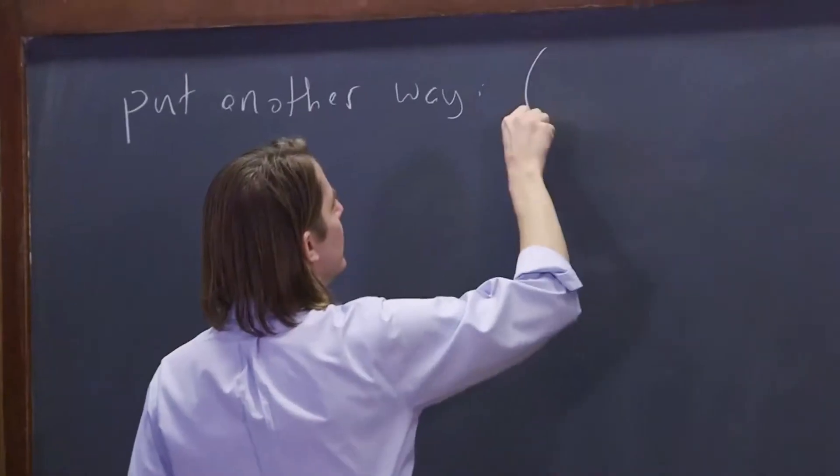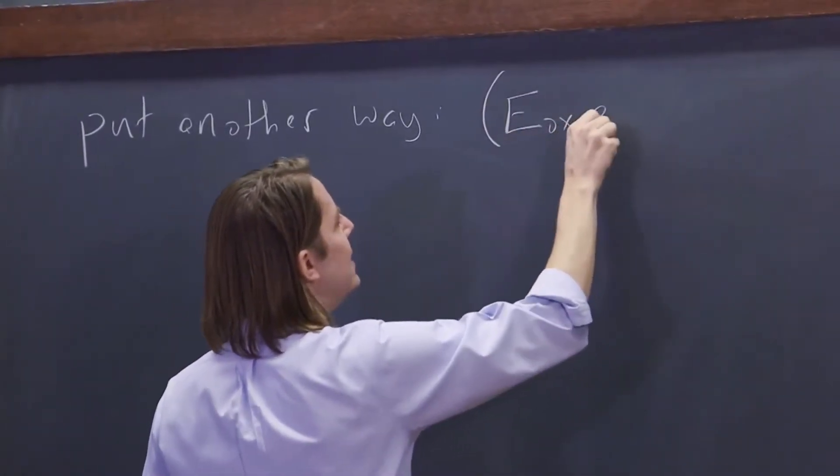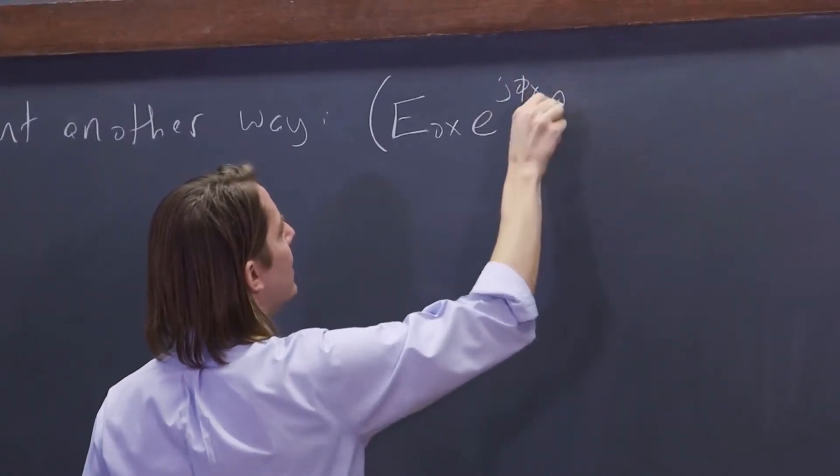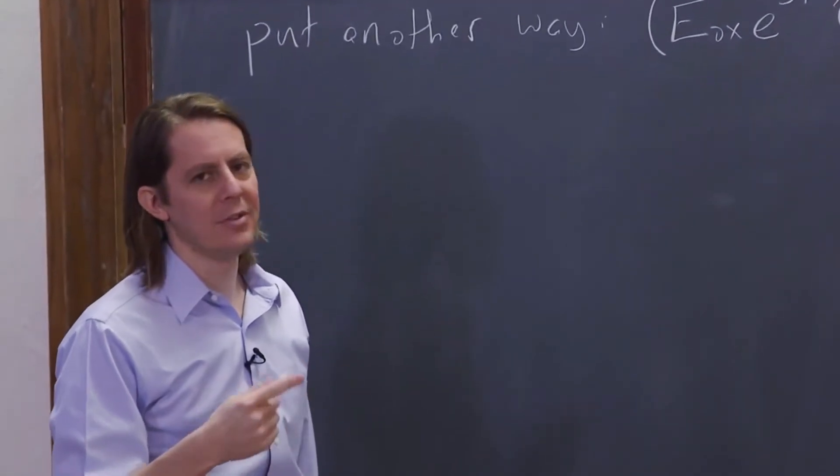So what we could do is just leave out E naught X, E to the J phi X I hat, and then what was left to be E to the J KZ minus omega T.